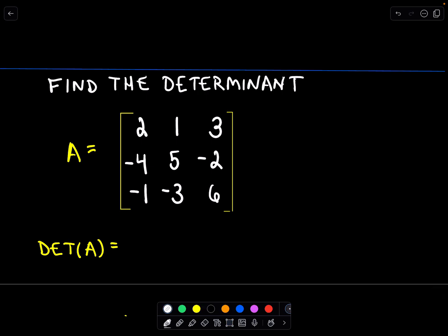So what I'm going to do is just look at my first two columns of my matrix and copy those down off to the side. So I've got 2, negative 4, and negative 1, and then I have 1, 5, and negative 3. There are some methods out there that use the third column. They're all equivalent, but I'm not going to use it in mine. Okay, so I've got the first two columns.